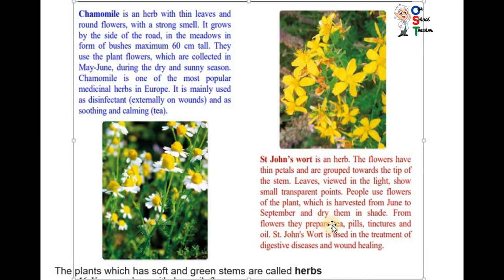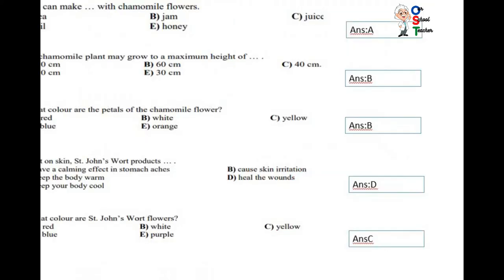People use flowers from the plant which are harvested from June to September and dry them in shade. From flowers, they prepare tea, pills, tinctures and oil. St. John's Wort is used in treatment of digestive diseases and wound healing. Now the questions.